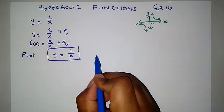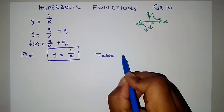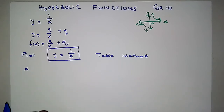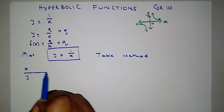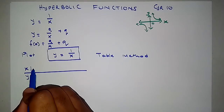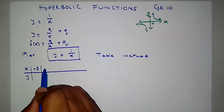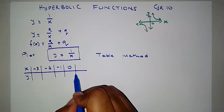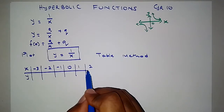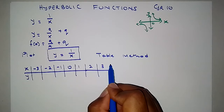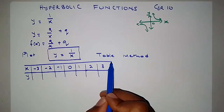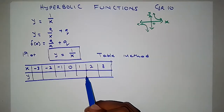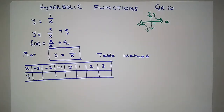Using our table method for plotting graphs, we're going to have x and y. We'll choose a bunch of x values: negative 3, negative 2, negative 1, 0, 1, 2, 3 — just any values that help us appreciate or show us the function to some degree.